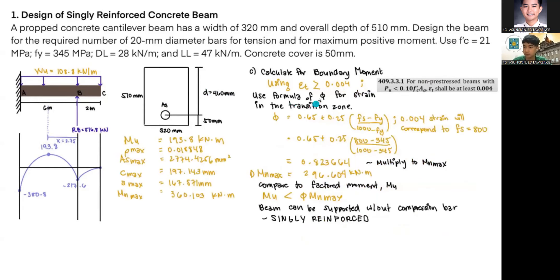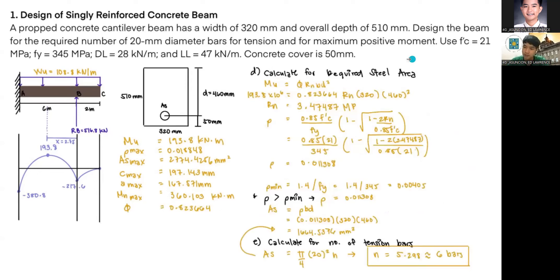Next, we apply the strength reduction factor φ in the transition zone at strain = 0.004. The formula is φ = 0.65 + 0.25 × (fs − Fy) / (1000 − Fy). Since strain is 0.004, fs = 800, giving φ = 0.823664. Multiplying by M_n_max of 360.143 kN·m gives a reduced capacity of 296.604 kN·m. Since MU = 193.8 kN·m is less than 296.604 kN·m, the beam can be designed as singly reinforced.